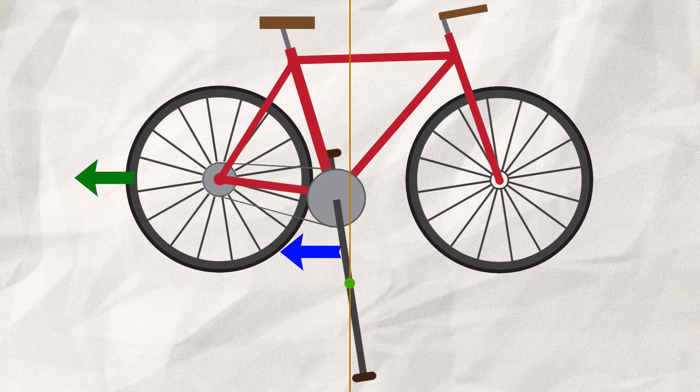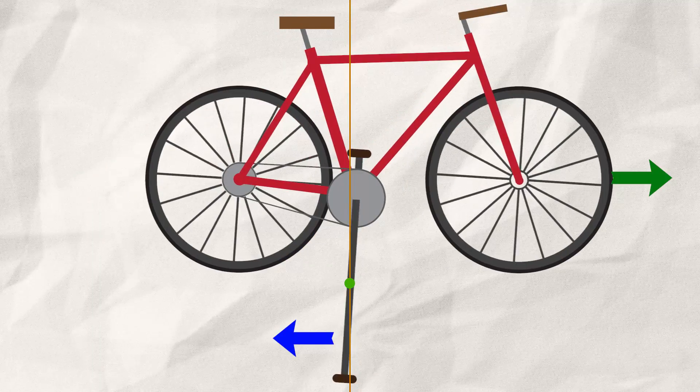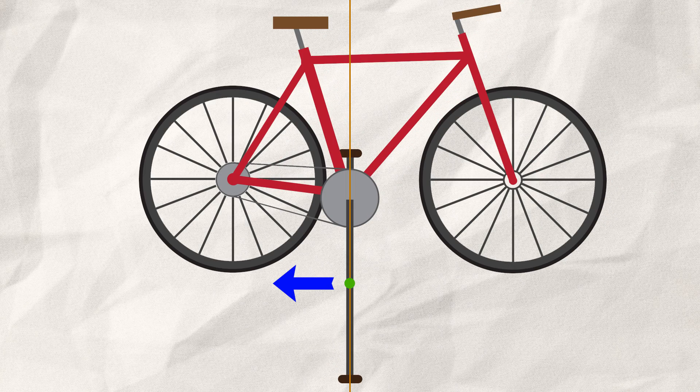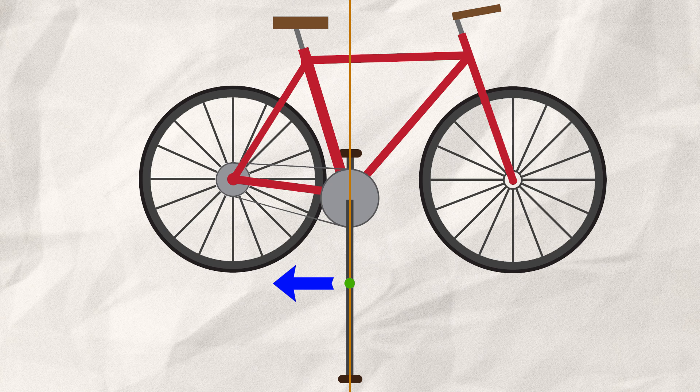If I pull above this point, the bike moves backwards. And if I pull below, the bike moves forwards. Pulling directly at the pivot point results in no movement at all, at least from pure rotation.